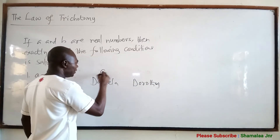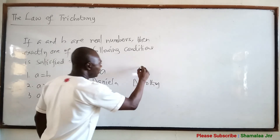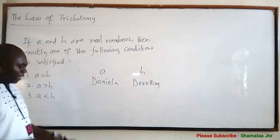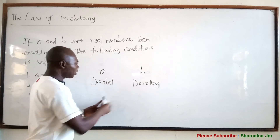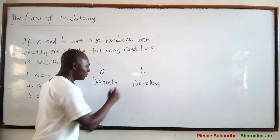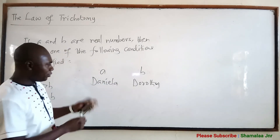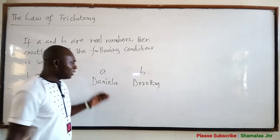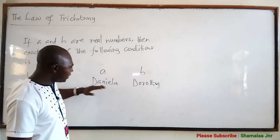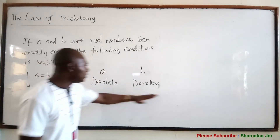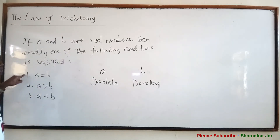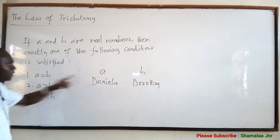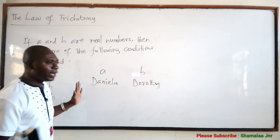Let's assume that Daniela is A and Dorothy is B. Now, if you want to apply the law of trichotomy to their heights, this is what you can say: if Daniela is of the same height as Dorothy, then the first condition will be satisfied — meaning A is equal to B in terms of height.